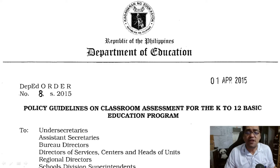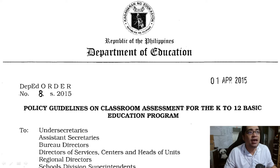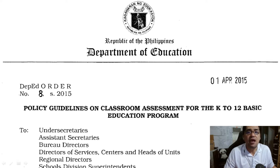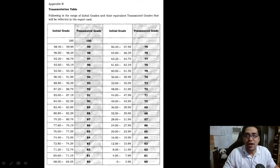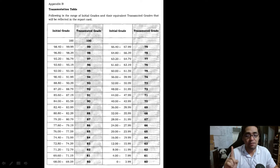Starting school year 2015 to 2016, schools in the Philippines have already started using this grading system given to us by the Department of Education. It is highlighted in this particular memo, DepEd Order No. 8, Series 2015. Included in this DepEd order are guidelines regarding the transmutation of grades. I'm not going to explain the whole grading system or the whole DepEd order. All I'm going to highlight is this last part of the grading system, which is the transmutation.